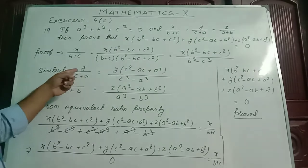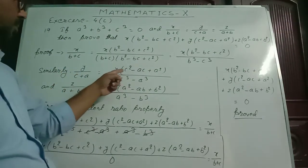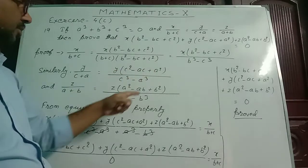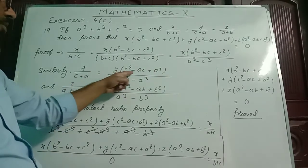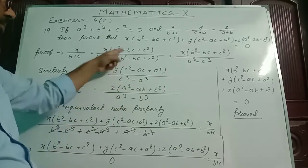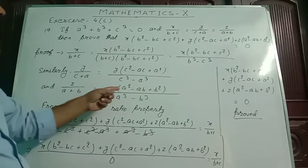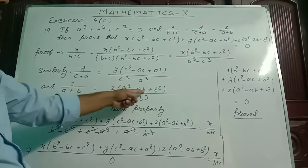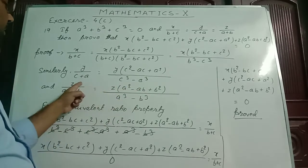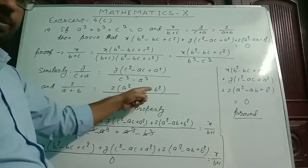Similarly, y by c plus a equals y into c square minus ac plus a square by c cube minus a cube, multiplying numerator and denominator both by c square minus ac plus a square. Similarly, z by a plus b equals z into a square minus ab plus b square by a cube minus b cube, multiplying both numerator and denominator by a square minus ab plus b square.